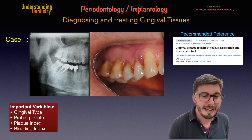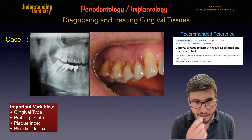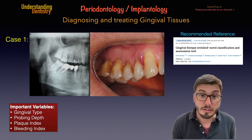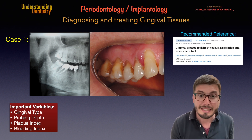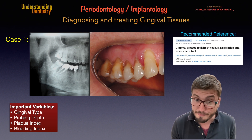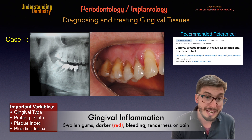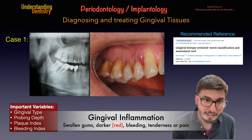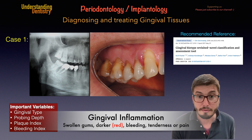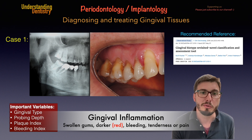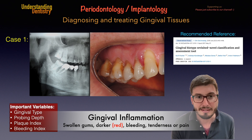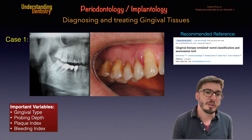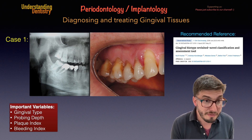We know that when the tissue is inflamed — when we have gingival inflammation or gingivitis — the tissue can get swollen and more red. The color becomes darker, more red, and of course we have bleeding on probing. The patient will report bleeding during brushing and even flossing. Those are aspects of inflammation.